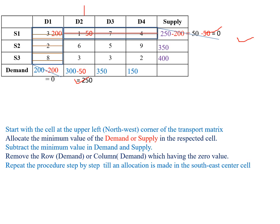Next, the upper-left corner cell has cost value 6. We observe demand and supply: supply is 350 and demand is 250. The minimum value is 250. We allocate 250 in the upper-left corner cell. Then subtract: 350 minus 250 equals 100 for supply, and 250 minus 250 equals 0 for demand. D2 column has zero value, so we remove the D2 column.